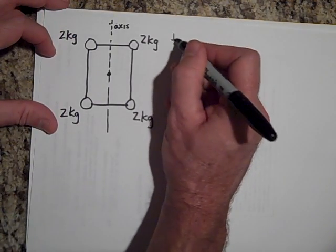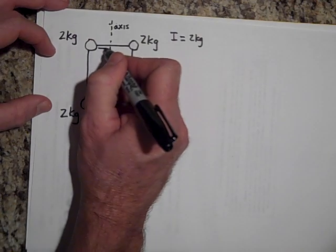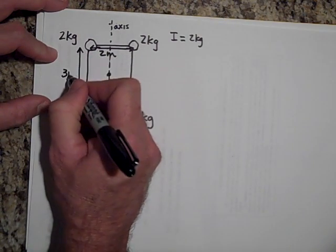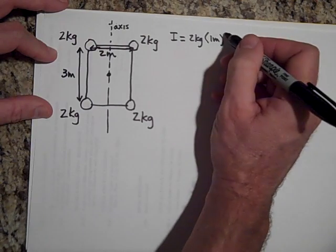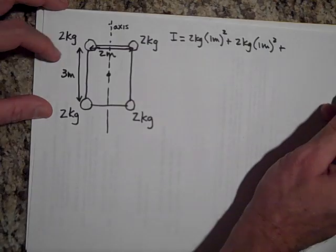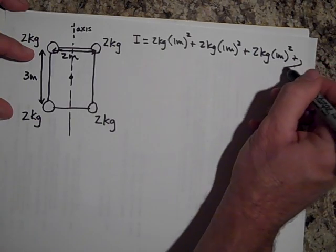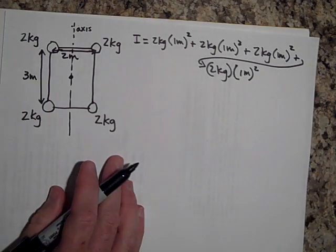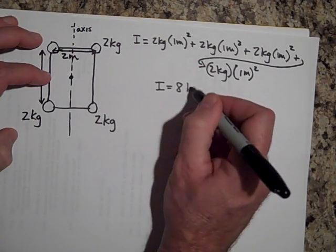Well, let's find it. I is equal to 2 kilograms times—I should tell you that this is 2 meters across and it's 3 meters down—so that would be 2 kilograms times 1 meter from the edge squared, plus 2 kilograms times 1 meter from the edge squared, plus 2 kilograms times 1 meter from the edge squared, plus 2 kilograms times 1 meter from the axis squared. So when you add all those up, I think you get 8. I equals 8 kilograms meters squared.